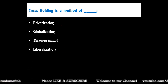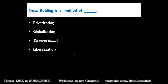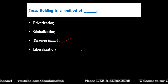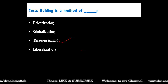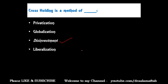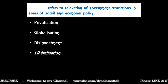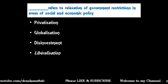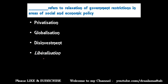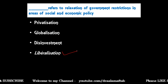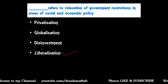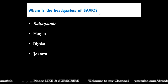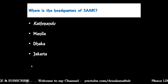Cross-holding is a method of — privatization, globalization, disinvestment, or liberalization. Cross-holding is a method of disinvestment in which one publicly holding company owns the shares of other public holding companies. Next: which term refers to relaxation of government restrictions in areas of social and economic policy — privatization, globalization, disinvestment, or liberalization? The correct answer is liberalization.